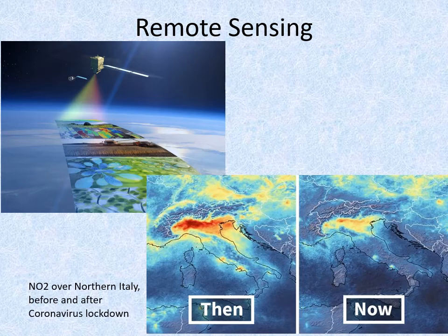The images below show digital false colour maps of nitrogen dioxide levels in the air above northern Italy before and after the COVID-19 lockdown.